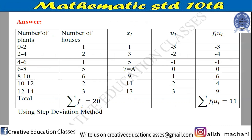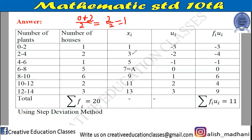First of all, the 'number of plants' column is the class — I have written it from the question. 'Number of houses' is the frequency — also from the question. Now this column is x_i. What is x_i? x_i is the mid value of the class. For example, for the class 0–2, x_i = (0 + 2) / 2 = 1. Then (2 + 4) / 2 = 3.